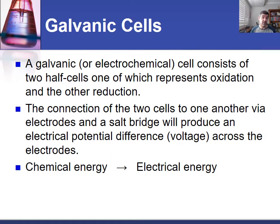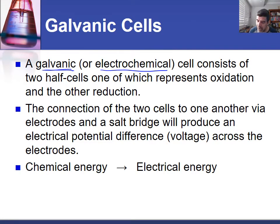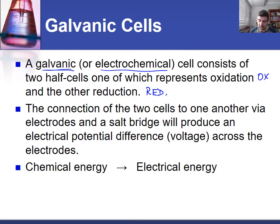Firstly we need to review galvanic cells. A galvanic cell is a particular type of electrochemical cell that consists of two half-cells, one of which represents an oxidation reaction and one a reduction. When we connect these two half-cells together via an external electrical circuit and also by an internal salt bridge, we can produce an electric potential difference or a voltage across those two electrodes.